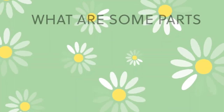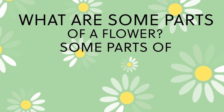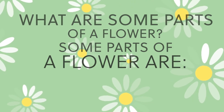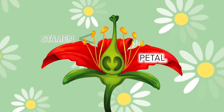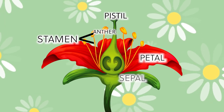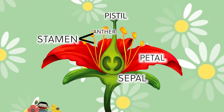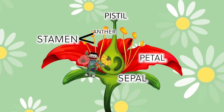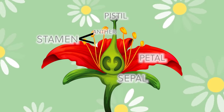What are some parts of a flower? Some parts of a flower are Petal, stamen, and the pestocebo. Petal, stamen, and the pestocebo.